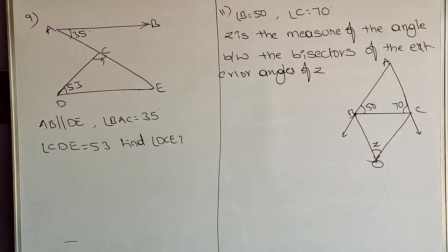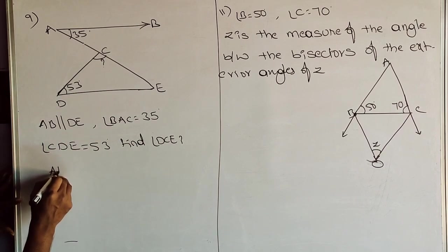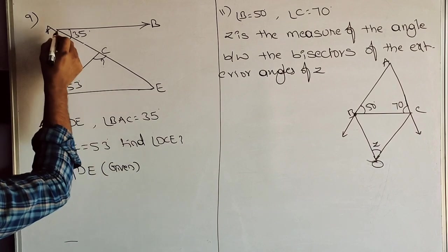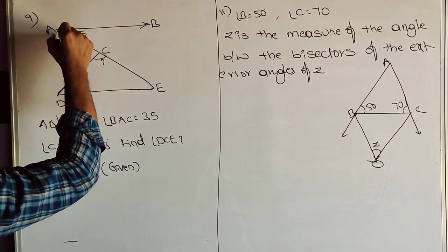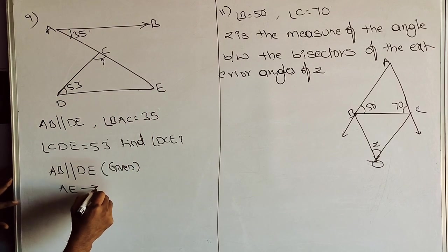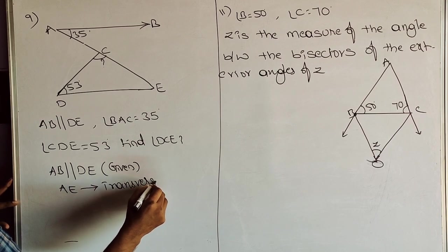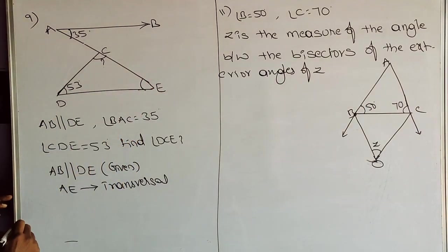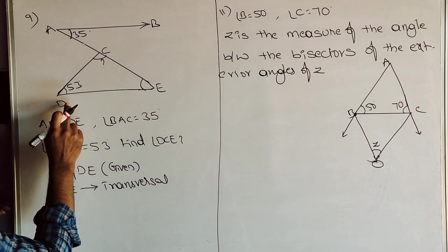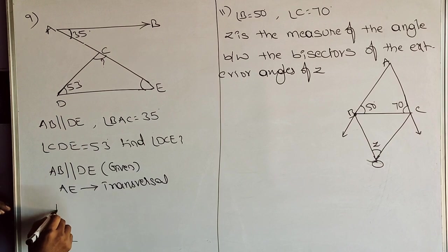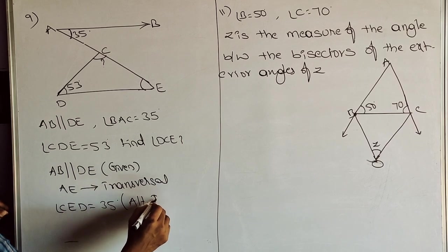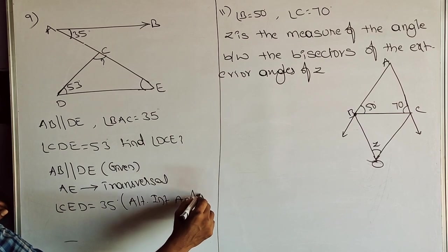Given that AB is parallel to DE, let AE be the transversal. AE is the transversal. If this is the transversal, these two angles are alternate interior angles. So angle CED is equal to 35 degrees, because of alternate interior angles.